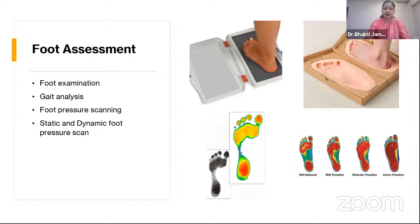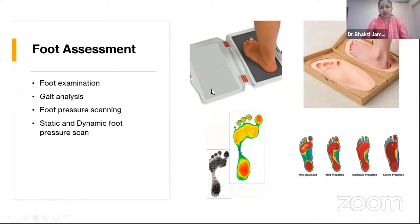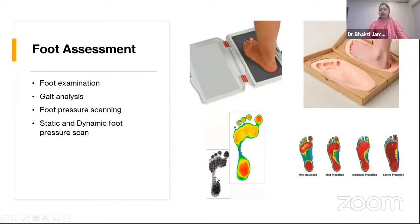We then start gait analysis, which can be a normal two-directional gait analysis. The next step is foot pressure scanning, which involves both manual and digital scanning. For the manual scan, the most popularly used method is the Harris-Matte method, which is a simple ink pad where we take the foot impression of the patient. More ink boxes indicate more pressure. Based on the arch portion — where less than 50% would indicate the arch — we can determine whether it is a normal foot, flat foot, or high arch foot.